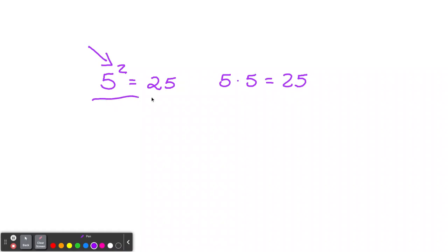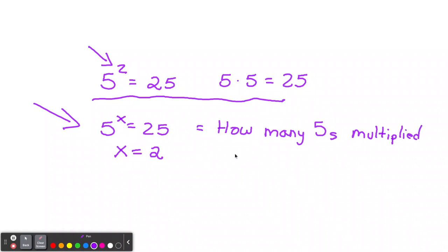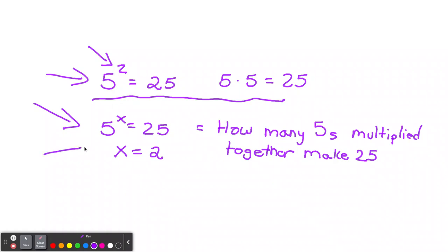That's how logarithms are related. With logarithms, we may not know the power. For example, 5 to the x equals 25 — here we don't know the power. We can guess because we just did the problem: x is 2, the power is 2. That's the logarithm. You're asking how many 5s multiplied together make 25, and the answer is 2.